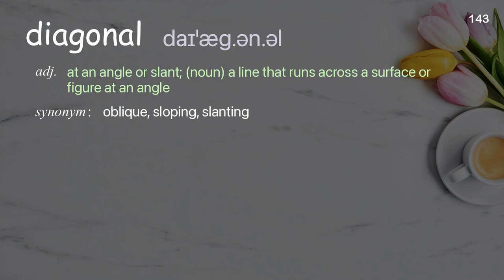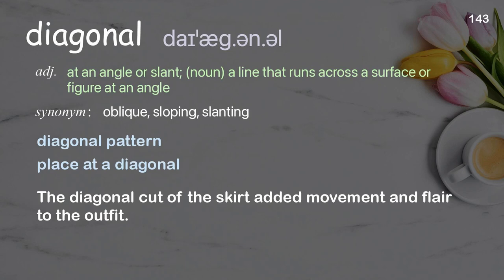Diagonal: at an angle or slant; noun, a line that runs across a surface or figure at an angle. Examples: diagonal pattern; place at a diagonal. The diagonal cut of the skirt added movement and flare to the outfit.